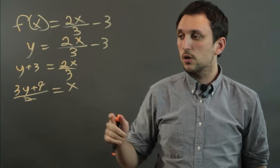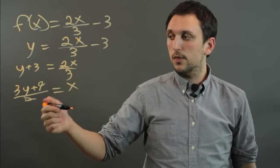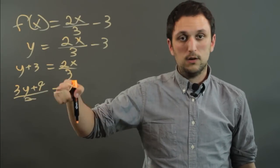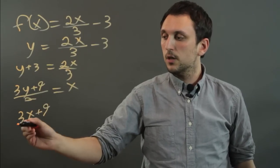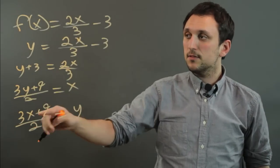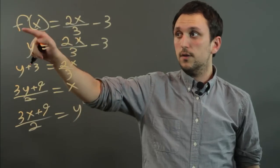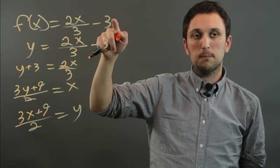Now to make it an inverse function, we just have to switch the x and the y. So we've solved for x, we just say 3x plus 9 over 2 equals y. And this is the inverse function of f of x equals 2x over 3 minus 3.